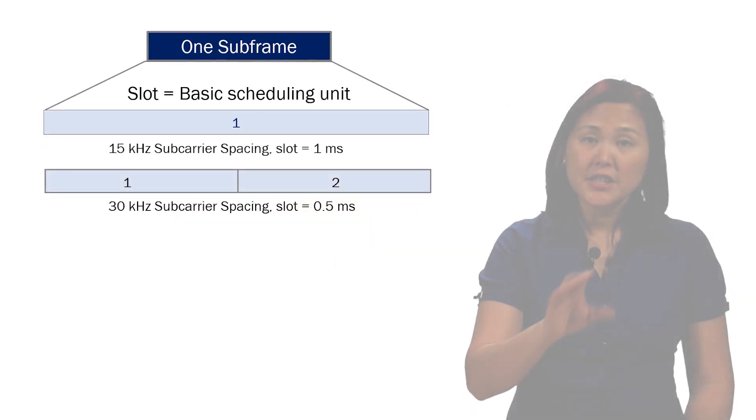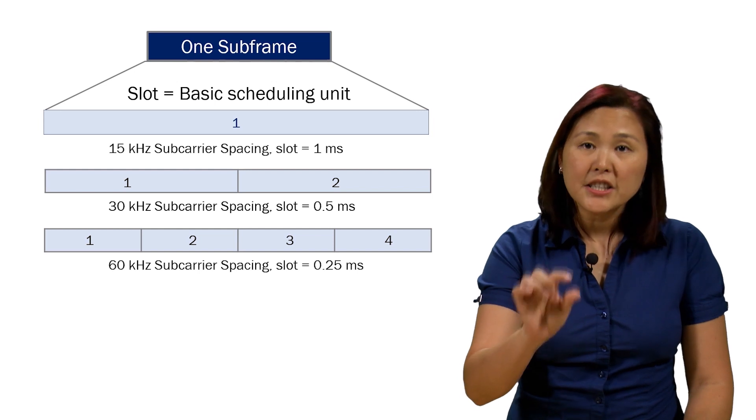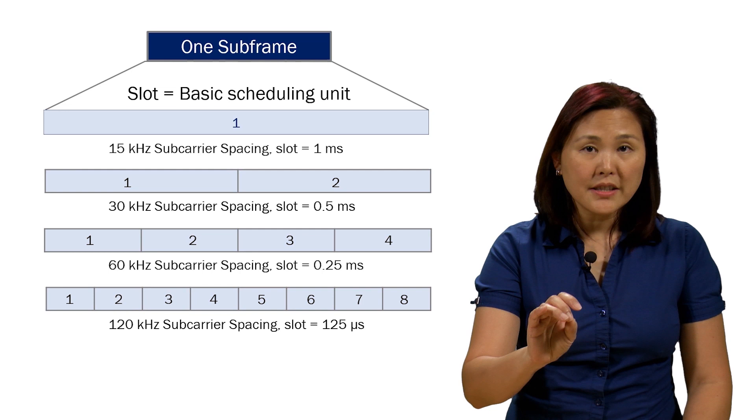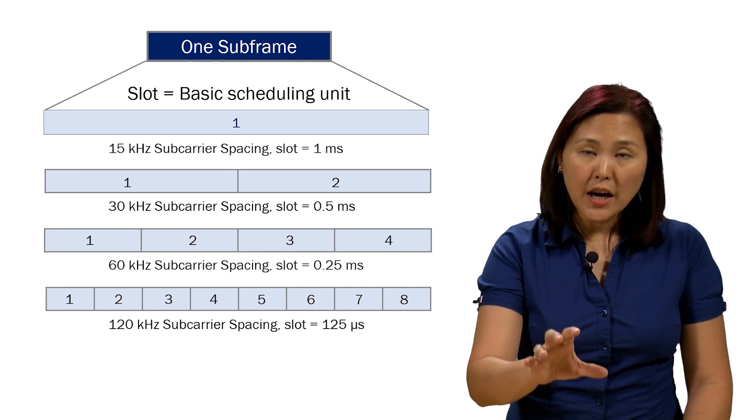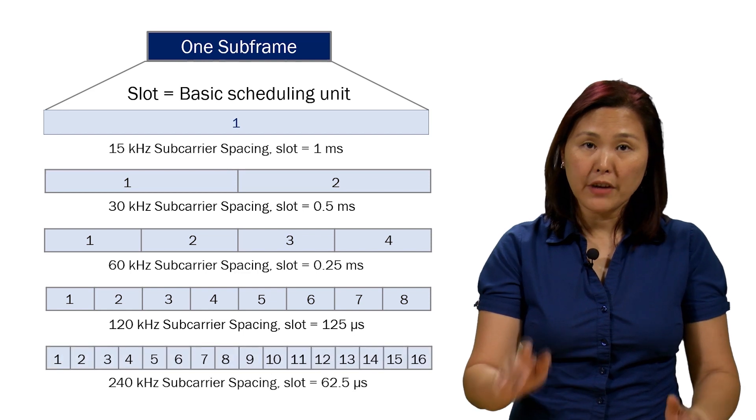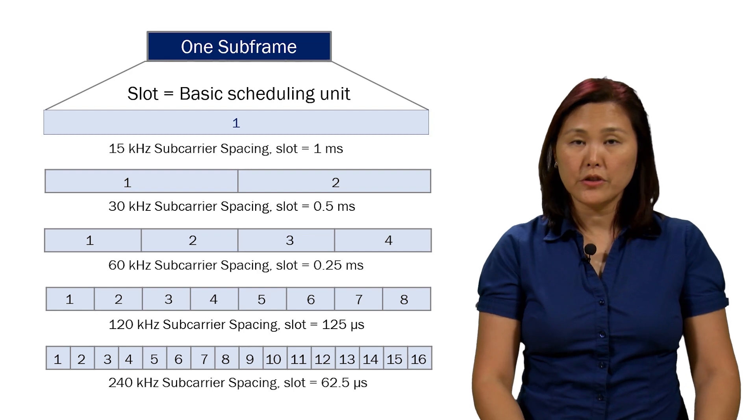Which means that if the subcarrier spacing is larger, the slot time is smaller. In other words, we can transmit more slots in the same amount of time compared to 4G. The larger pipe in 5G provides greater flexibility for the spacing between the subcarriers.